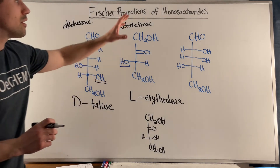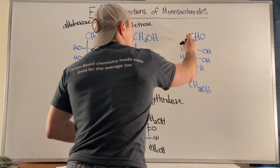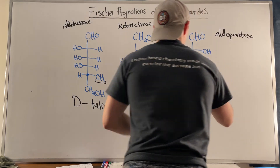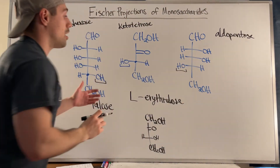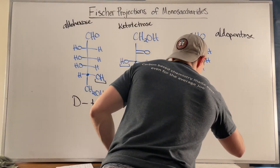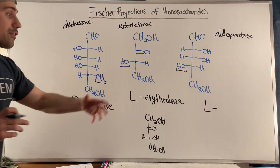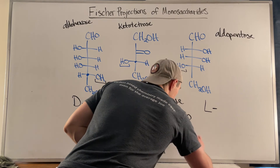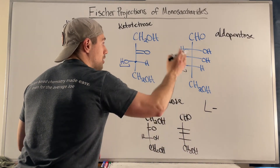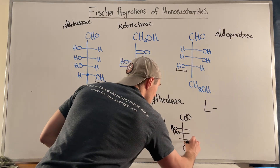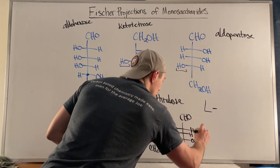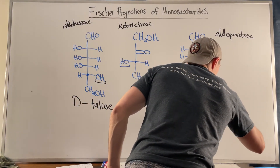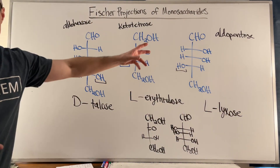Last but not least, we clearly have an aldose with five carbons — this is an aldopentose. Looking at the last stereocenter, the OH is on the left-hand side, so we know we have an L-sugar. You'd look for the D-version in the chart: instead of right, right, left for the OH positions, it would be left, left, right. Consulting the chart, that D-sugar is lyxose, so this one here is L-lyxose.